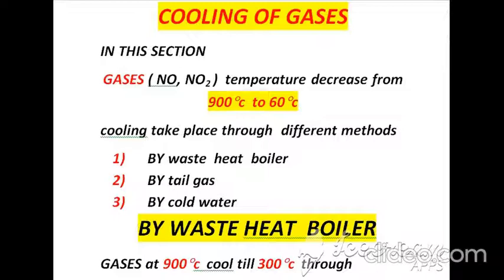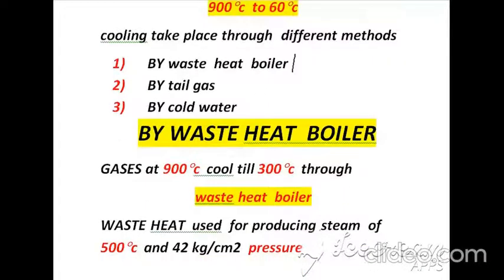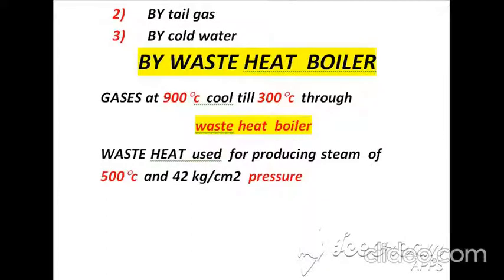The first cooling method is by waste heat boiler. In this section, temperature is decreased from 900°C to 300°C, and the waste heat is used for producing steam at a temperature of 500°C and a pressure of 42 kg per centimeter square.